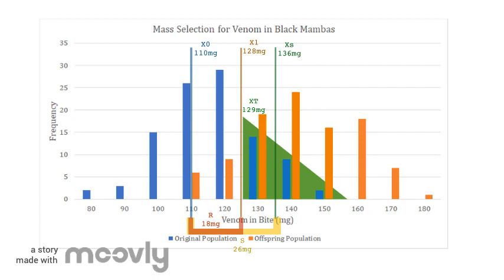This response was an increase in the average venom per bite by about 18 milligrams. Although there was a large response in this first experiment, if I could repeat it indefinitely, the response would eventually dwindle and become insignificant.